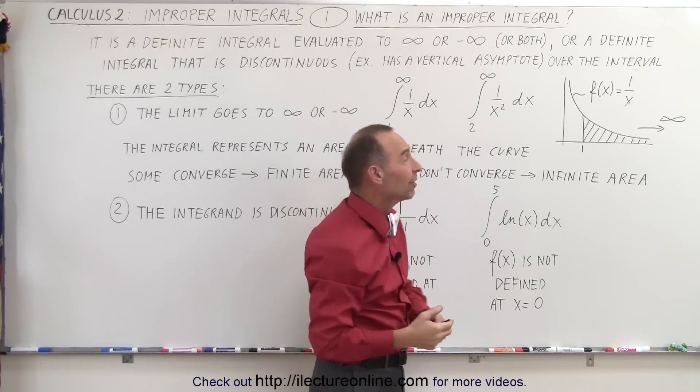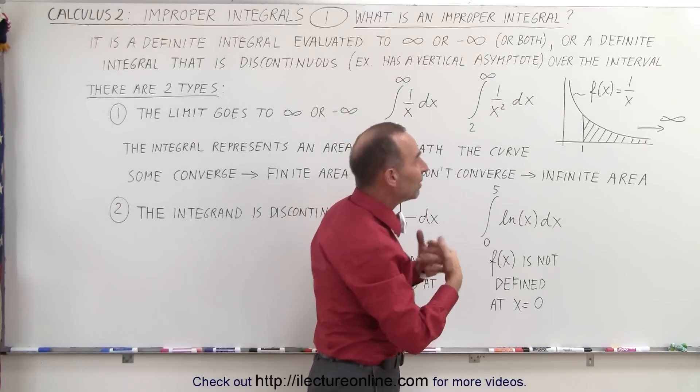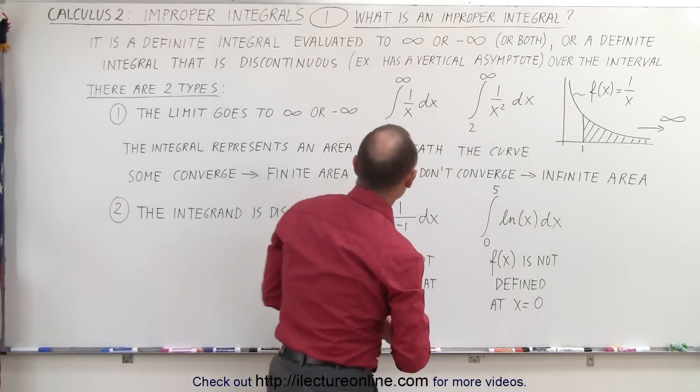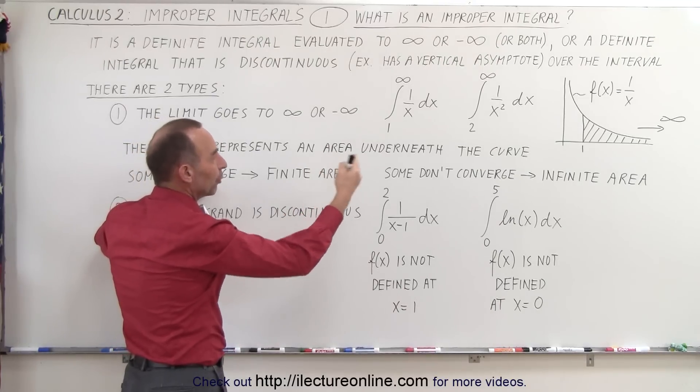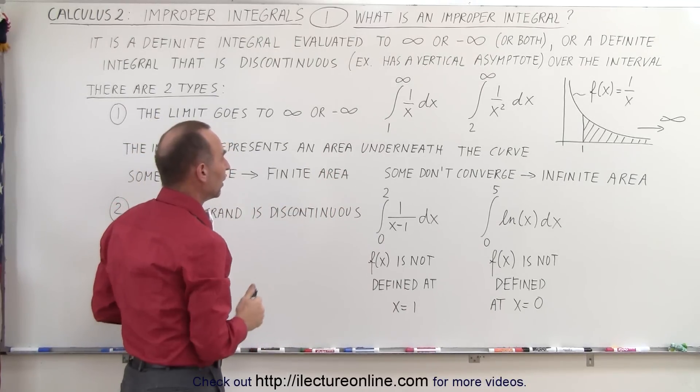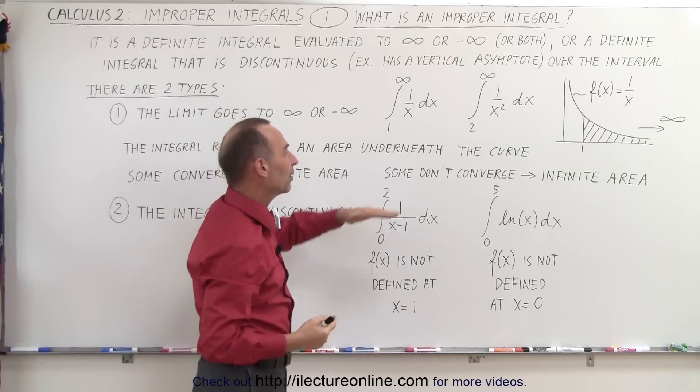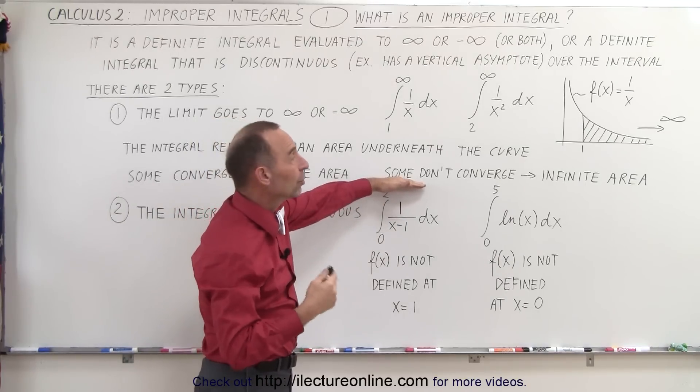Now, either there's a finite amount of area or there's an infinite amount of area. If there's a finite amount, then we call the integral convergent. It converges down to a particular number. But if there's an infinite amount of area, then the integral does not converge.